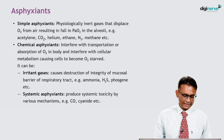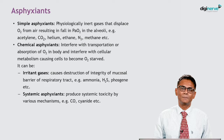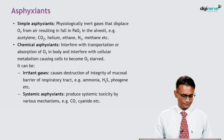Chemical asphyxiants interfere with the transportation or absorption of oxygen in the body and interfere with cellular metabolism, causing cells to become oxygen starved. Irritant gases cause destruction of the integrity of the mucosal barrier of the respiratory tract. Examples include ammonia, hydrogen sulfide gas, and phosphine gas.